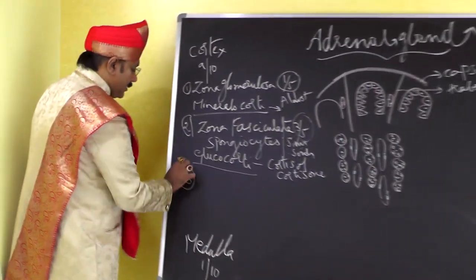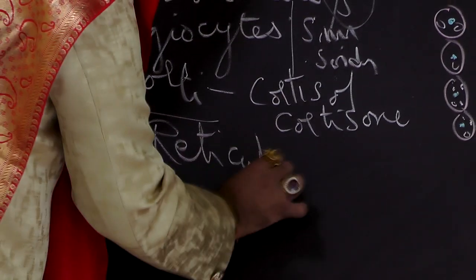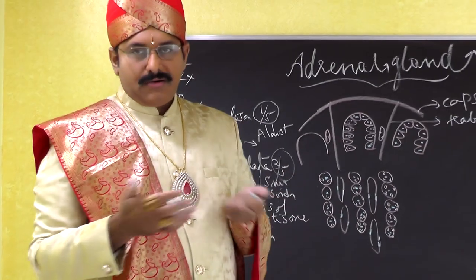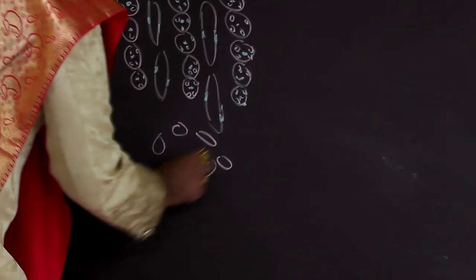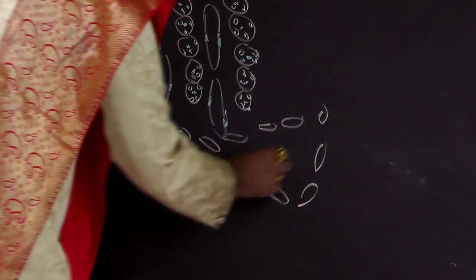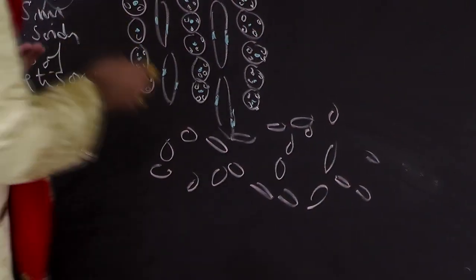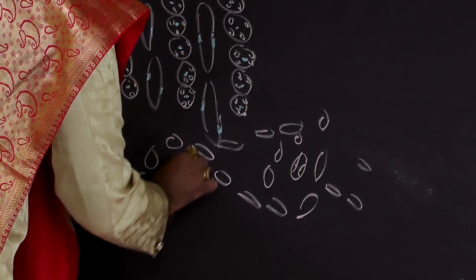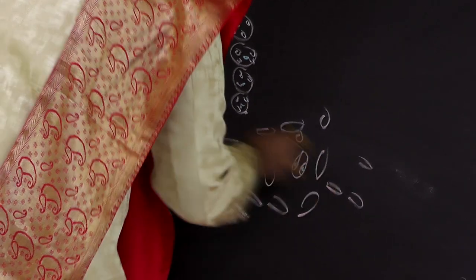The third zone is the zona reticularis. 'Reticulum' means a meshwork or network, and here the cells are arranged in the form of a network or meshwork. Blood vessels are present in between these cells.